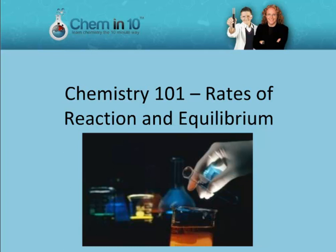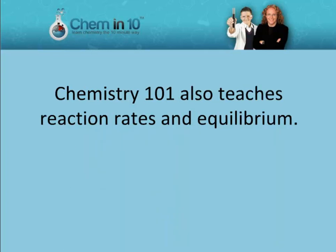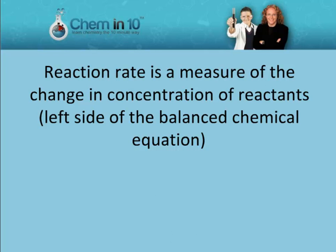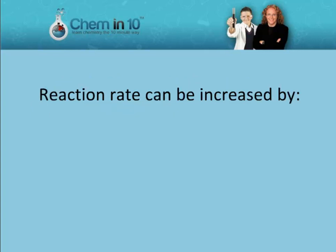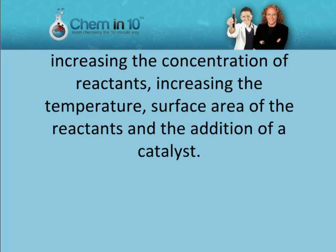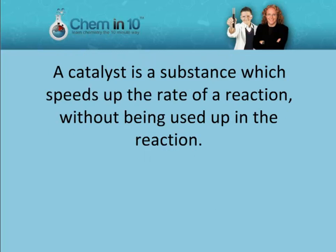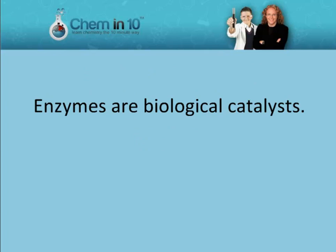Chemistry 101, Rates of Reaction and Equilibrium. Chemistry 101 also teaches reaction rates and equilibrium. Reaction rate is a measure of the decrease in concentration of reactants — the left side of the balanced chemical equation — or the increase in concentration of products — the right side of the balanced chemical equation — over time. Reaction rate can be increased by increasing the concentration of reactants, increasing the temperature, increasing the surface area of the reactants, and through the addition of a catalyst. A catalyst is a substance which speeds up the rate of a reaction without being used up in the reaction. Enzymes are biological catalysts.